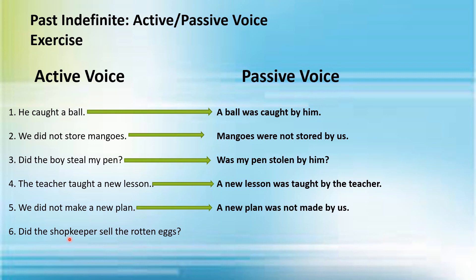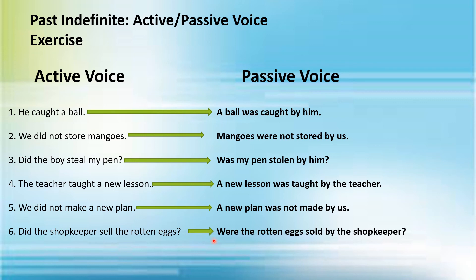Number six: 'Did the shopkeeper sell the rotten eggs?' 'The rotten eggs' is the object; it will come at the start, and 'did' shows this is the interrogative sentence. The passive voice will be: 'Were the rotten eggs sold by the shopkeeper?' You see 'were' has been taken out to the start of the sentence because it's a question, and you added the third form of the verb 'sold.'